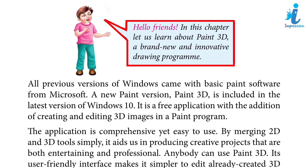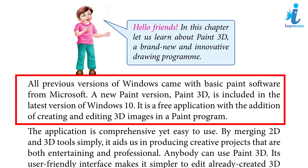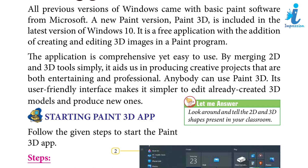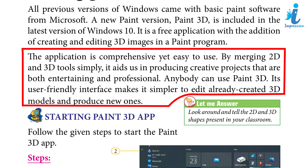Hello friends! In this chapter, let us learn about Paint 3D, a brand new and innovative drawing program. All previous versions of Windows came with basic Paint software from Microsoft. Paint 3D is included in the latest version of Windows 10. It is a free application with the addition of creating and editing 3D images in a Paint program. The application is comprehensive yet easy to use. By merging 2D and 3D tools, it aids us in producing creative projects that are both entertaining and professional. Anybody can use Paint 3D — its user-friendly interface makes it simpler to edit already-created 3D models and produce new ones.